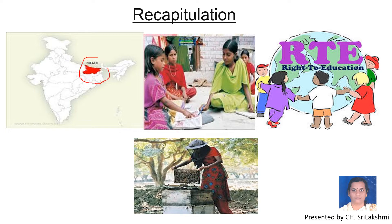This is the Bihar state on the India political map. Now we have also seen how Anita struggled to go to school. Her parents did not allow her to go to school because she was a girl child. They told her to go and graze the goats. But with the help of her teacher, somehow she made her parents agree to let her go to school.